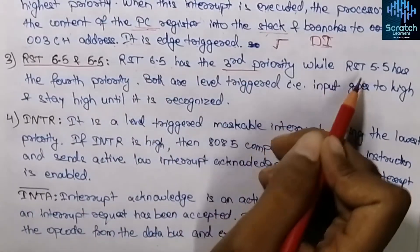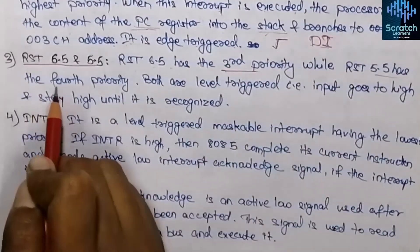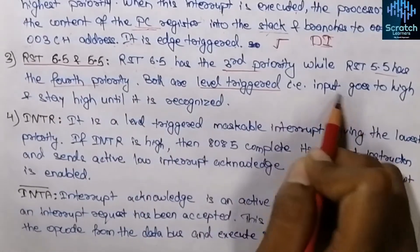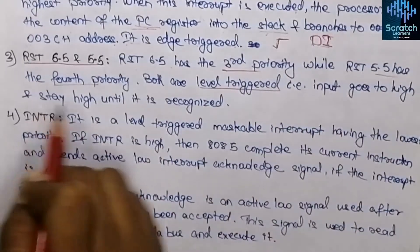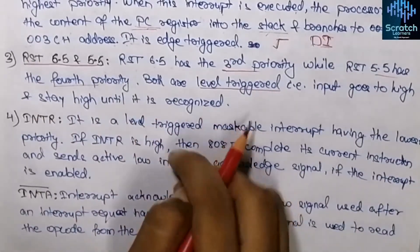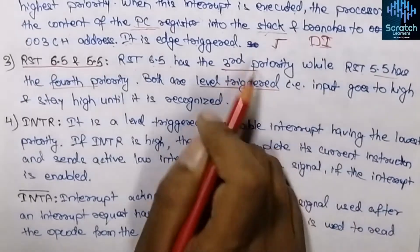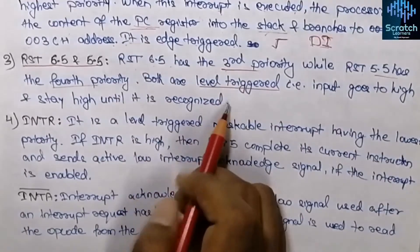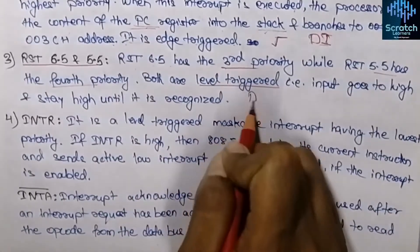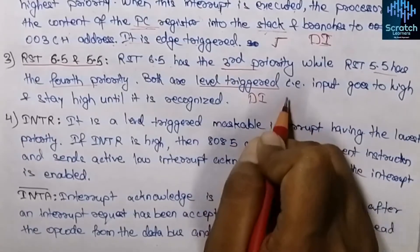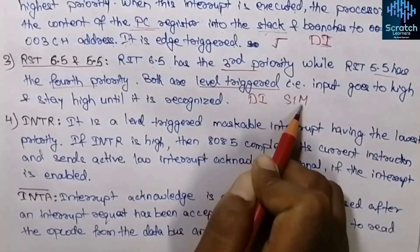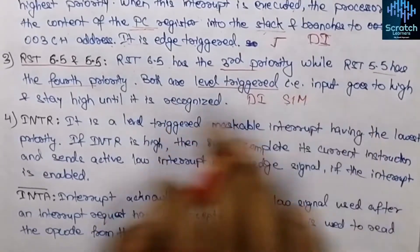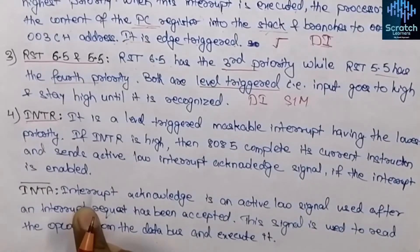RST 6.5 has the third priority while RST 5.5 has the fourth priority. Both of these are level triggered — the input goes high and stays high until it is recognized. These interrupts are also maskable and can be masked using the DI (Disable Interrupt) instruction, the SIM (Set Interrupt Mask) instruction, or by resetting the microprocessor.